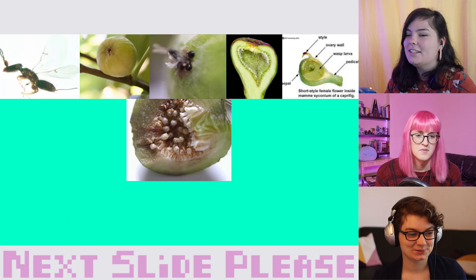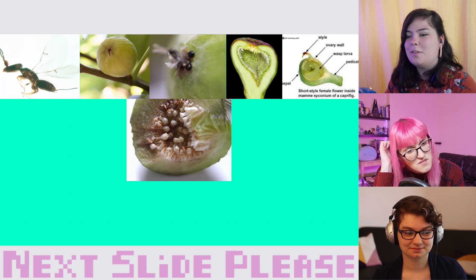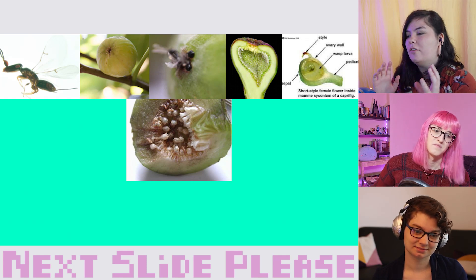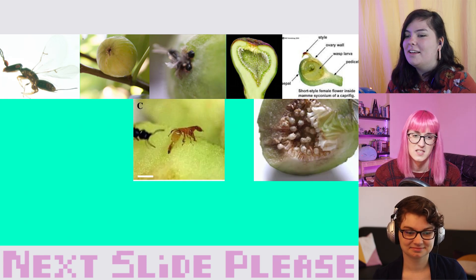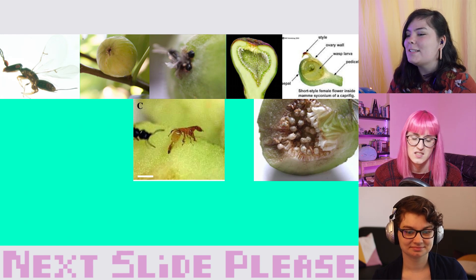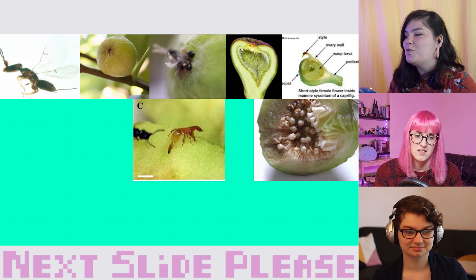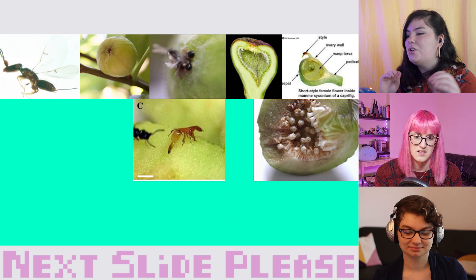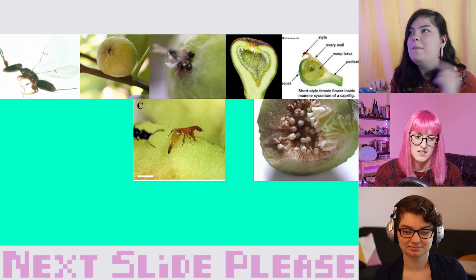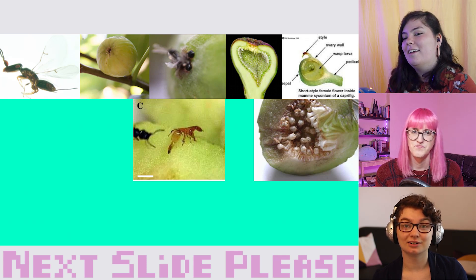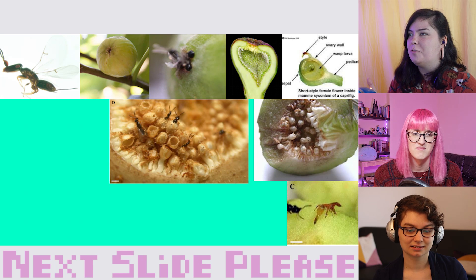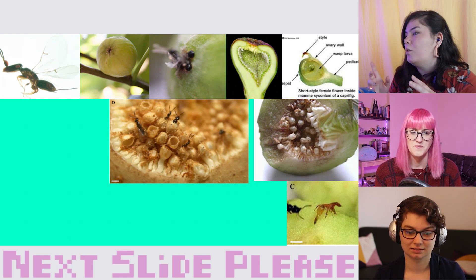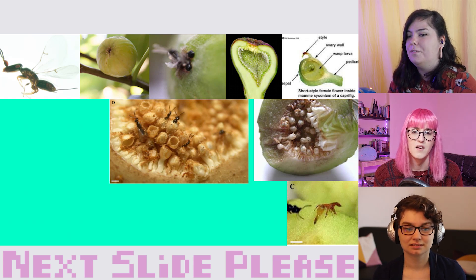After the eggs are laid, the ovary forms a gall around the developing larvae, and the wasp larvae develop as the fig does. After a few weeks, wingless, sightless male wasps begin to emerge. The male wasps use their strong mandibles to chew into other galls that are still closed and mate with the female wasps still inside. By the time the female wasps emerge from their galls, the male flowers of the fig have matured and the female wasps get covered in pollen from inside the fig.